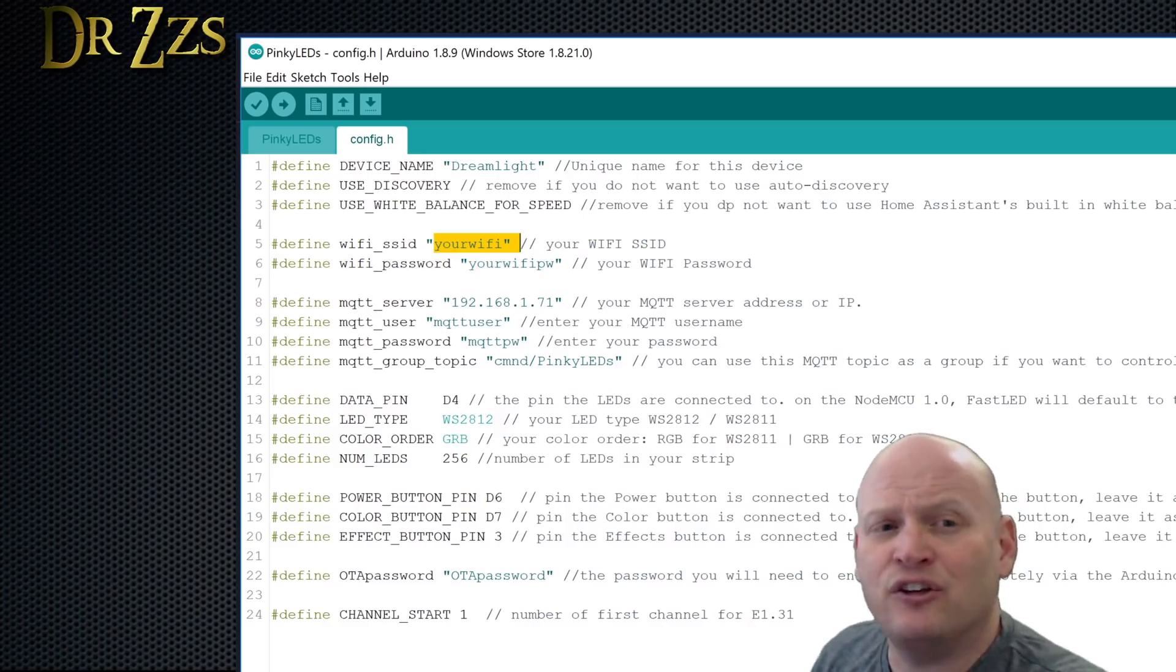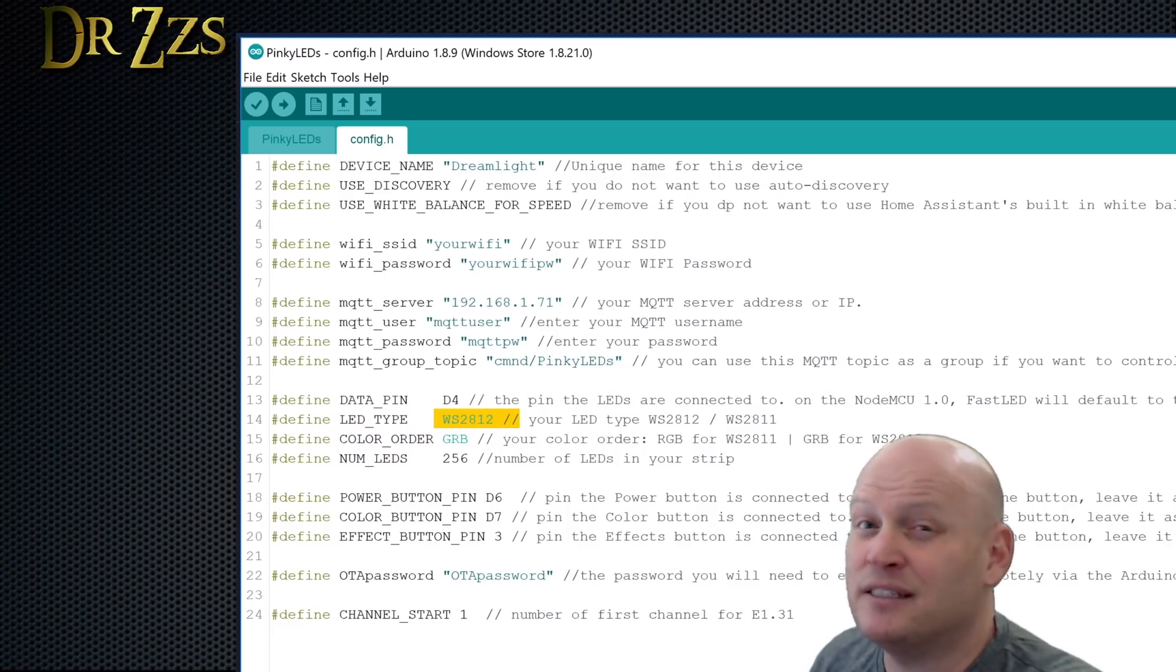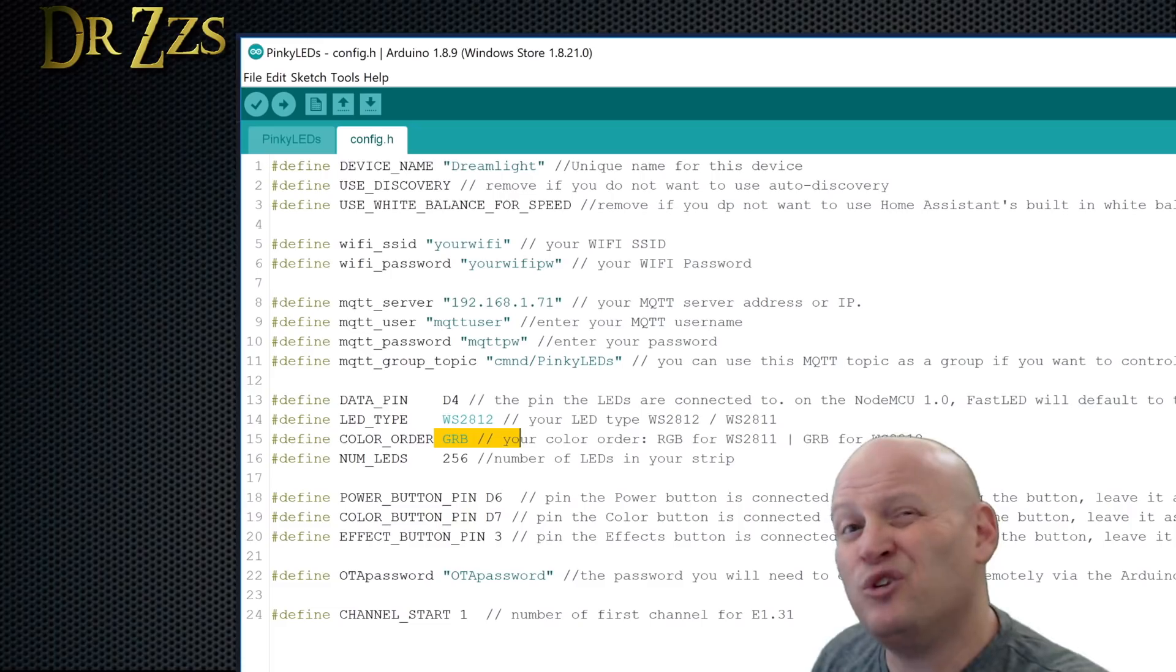You need things like your Wi-Fi, your password, MQTT broker. If you want to change the data pin that you're using for the effects. If you have 2811 lights instead of 2812. When you do test your lights, you may find that it's not in GRB order. It might be RGB. I don't know if there's any others. But make sure this is right as well. And then make sure you have the correct number of LEDs.